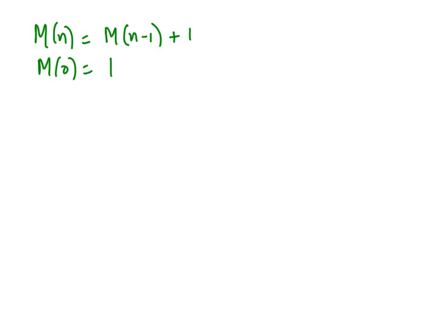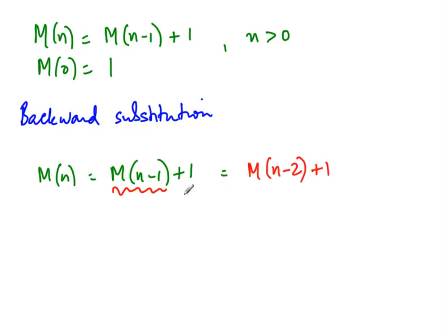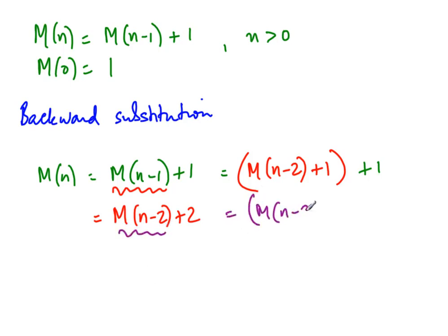The simplest way to solve this is what is called backward substitution: we keep expanding and look for a pattern. We start with M of n equals M of n minus 1 plus 1. If n minus 1 is not 0, we can expand using the same formula: M of n minus 2 plus 1, so M of n becomes M of n minus 2 plus 2. By the same logic, expanding M of n minus 2 gives M of n minus 3 plus 1, so M of n becomes M of n minus 3 plus 3. Once you expand a few times, you begin to see a pattern.